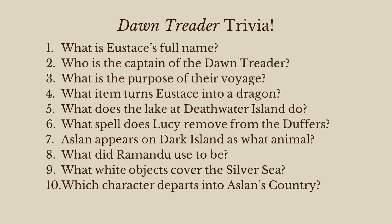What is Eustace's full name? His last name is Scrub. Does anybody know the middle name? Clarence. Eustace Clarence Scrub — and he almost deserved it. That's actually the first line of the book. Number two: who is the captain of the Dawn Treader? Drinian. Good.